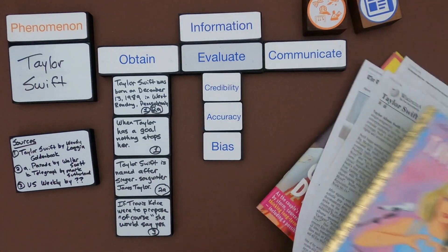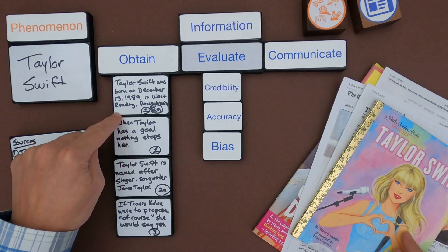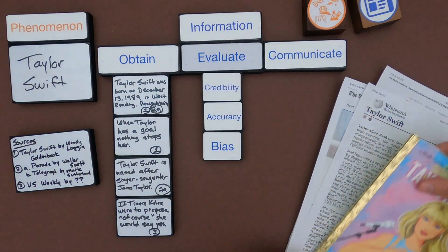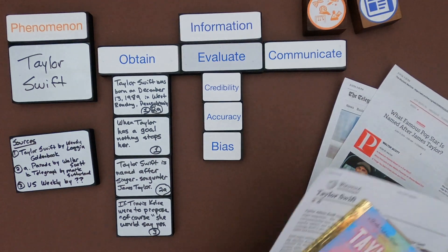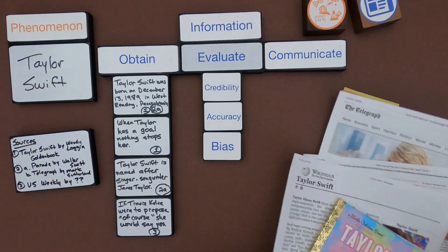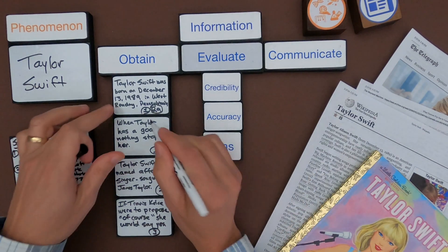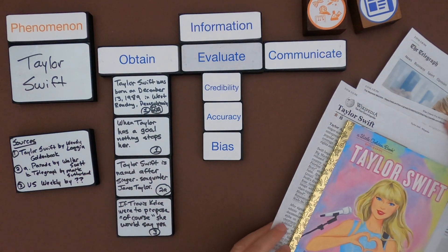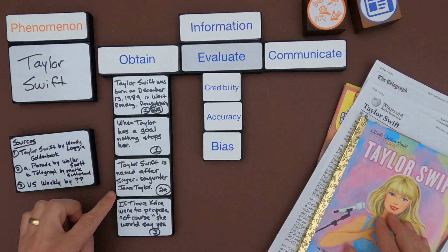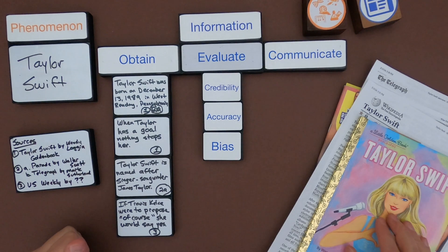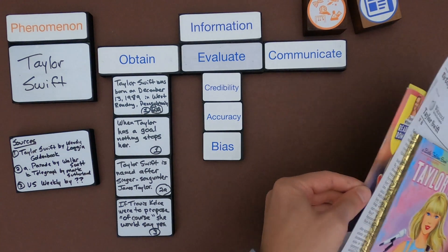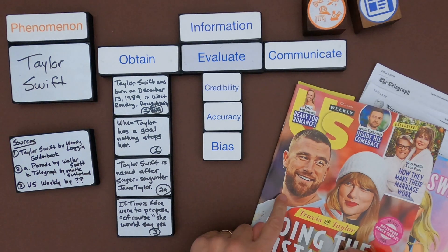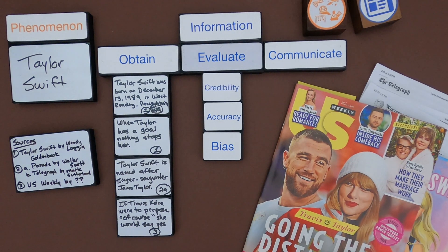Okay, so the information that I've gathered here, and then I'm citing it on the side. So the first bit of information is that Taylor Swift was born on December 13, 1989 in West Reading. That comes from both this book, Taylor Swift, and also comes from this article, I guess it would be 2A from The Telegraph. I think I might have that backwards, so that would be 2B. And this would be 2A. And then the next one, When Taylor Has a Goal, Nothing Stops Her. That comes from this book on Taylor Swift. And then the next one, which comes from the other article, is that Taylor Swift was named after singer-songwriter James Taylor. And then the last one is about this. I don't know if this will date very well, but apparently she's been dating Travis Kelsey, a football player. And according to the source in here, if he asks her, proposes to her, of course she will say yes. And so that comes from Us Weekly. So here's my sources.